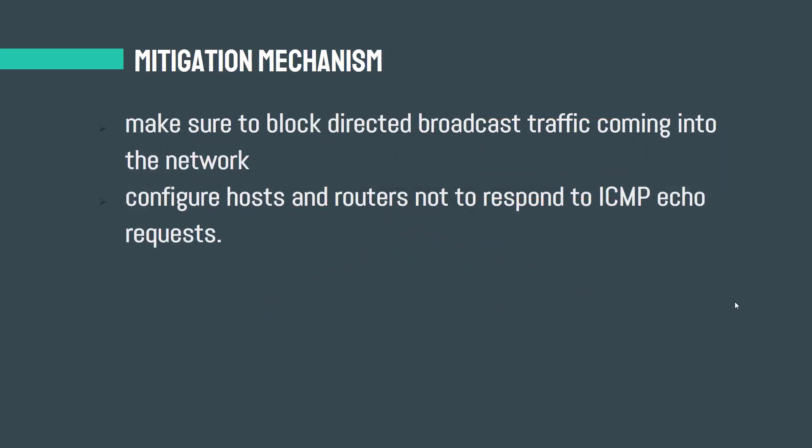That was a short description of the Smurf attack. Let me tell you the mitigation mechanism — how we can protect from this kind of attack. The Smurf attack poses real risks if servers are overwhelmed. Disabling IP broadcasting and using reliable detection tools help limit the chance and impact of this attack. One step for mitigation: make sure to block directed broadcast traffic coming into the network.